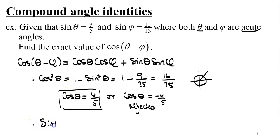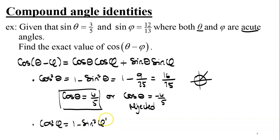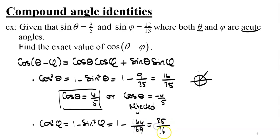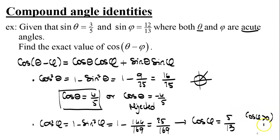Similarly, cosine squared phi equals 1 minus sine squared phi equals 1 minus 144 over 169, which is 25 over 169. So cosine phi equals 5 over 13. Since phi is also acute and in quadrant one, cosine phi is positive.